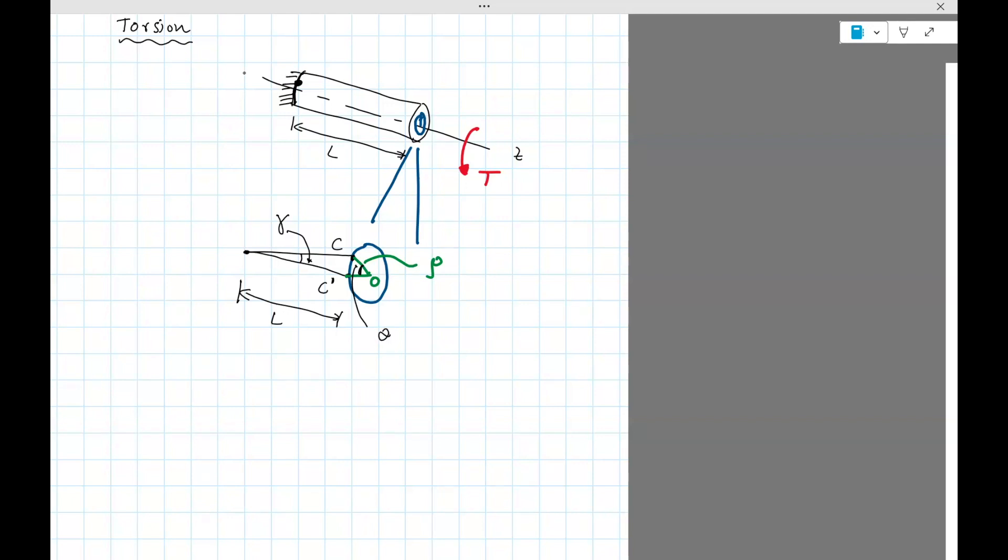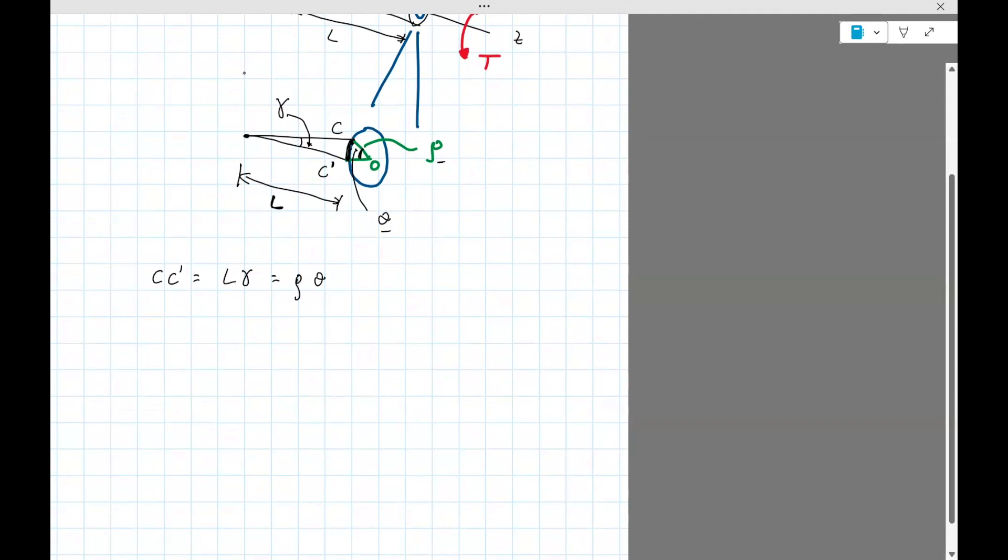Now we can do some geometry here. C C prime is arc length. I'm going to write it in two ways. One is C C prime is L times gamma. So arc length is basically the radius, which is L times gamma, right? We can also write the arc length as rho times theta. The same way or two ways that we're taking the same thing. So now from the latter expression, these two, we can write a solution for gamma. It's rho theta divided by L.